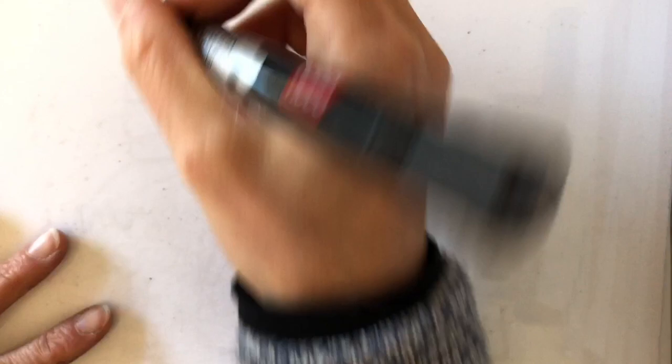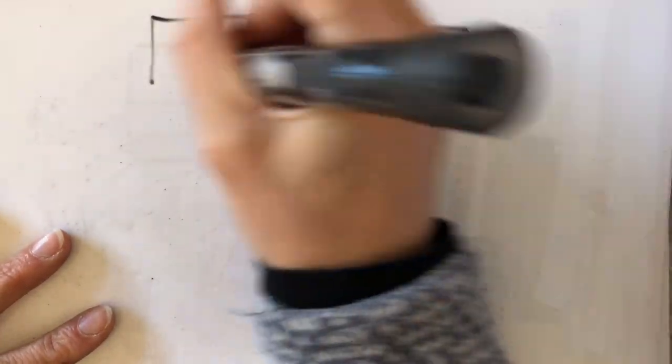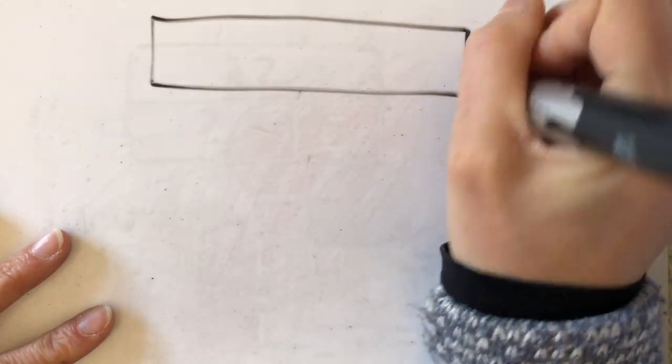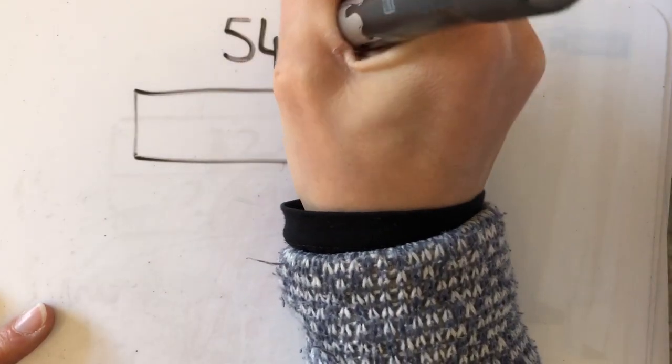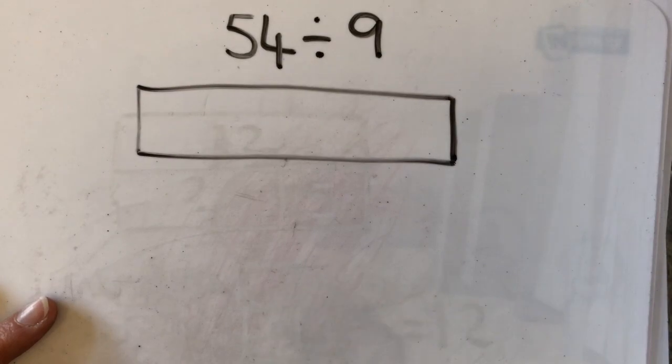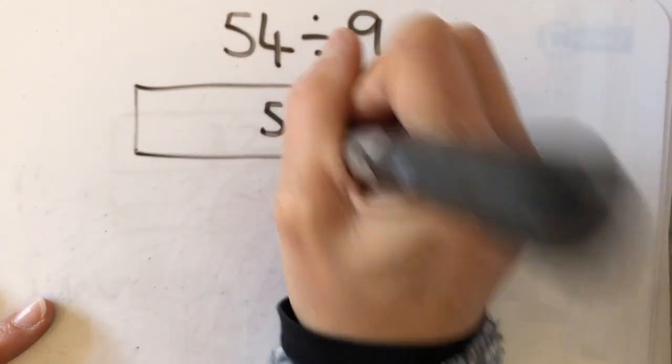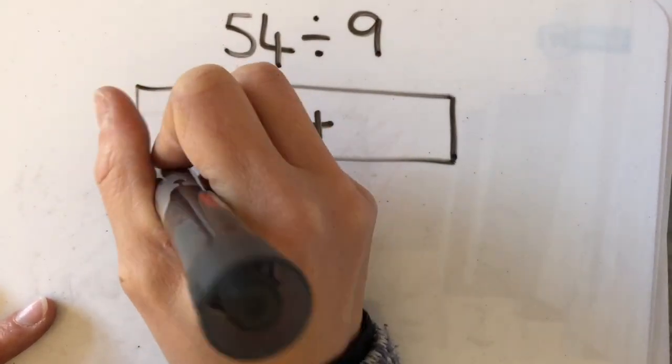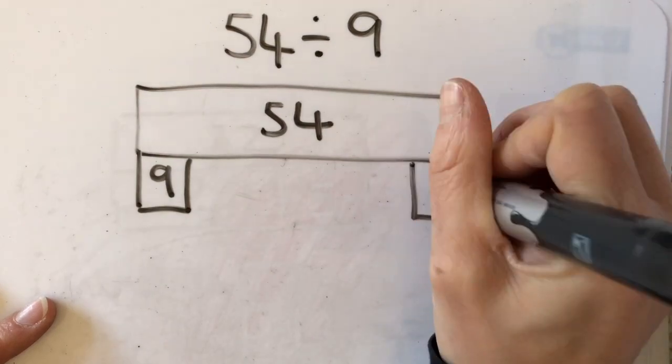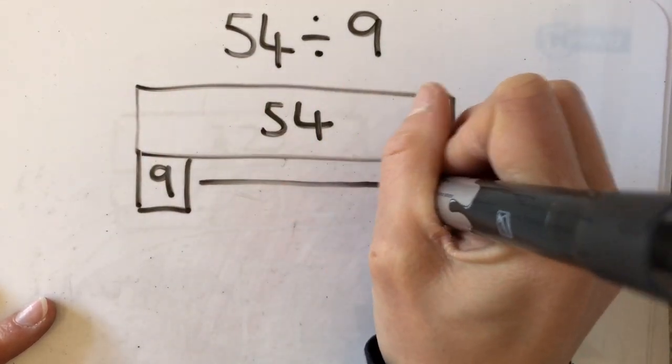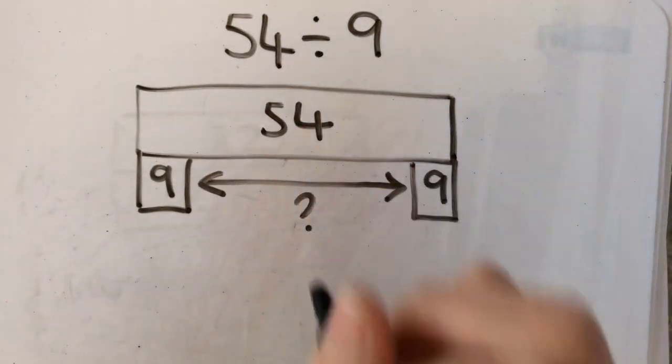And finally, I know that I'm doing 54 divided by 9. So this time I know the value of each group. I know my total is 54 and I know that each group is worth 9. What I don't know is how many groups I have got.